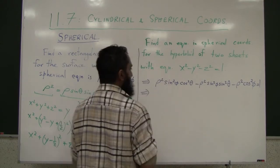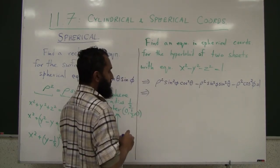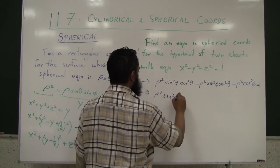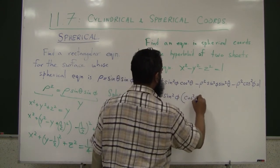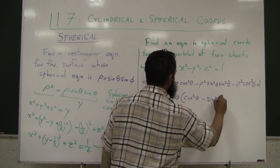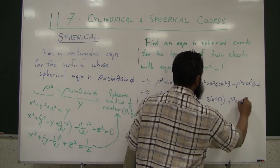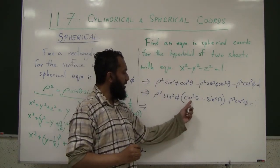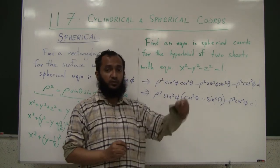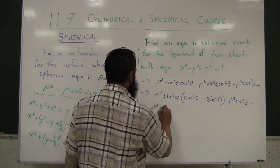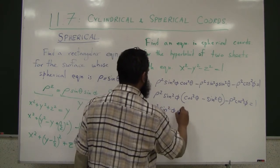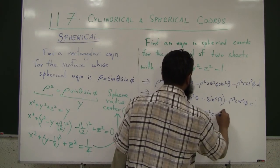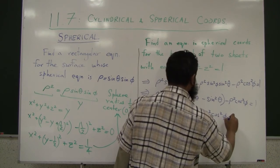Let's do some factorizing and try to simplify this if we can. If I factorize this thing, I get ρ²sin²(φ)[cos²(θ) - sin²(θ)] - ρ²cos²(φ) = 1. And from here, if you recall, cos²(θ) - sin²(θ) is cos(2θ). So this is ρ²sin²(φ)cos(2θ) - ρ²cos²(φ) = 1.